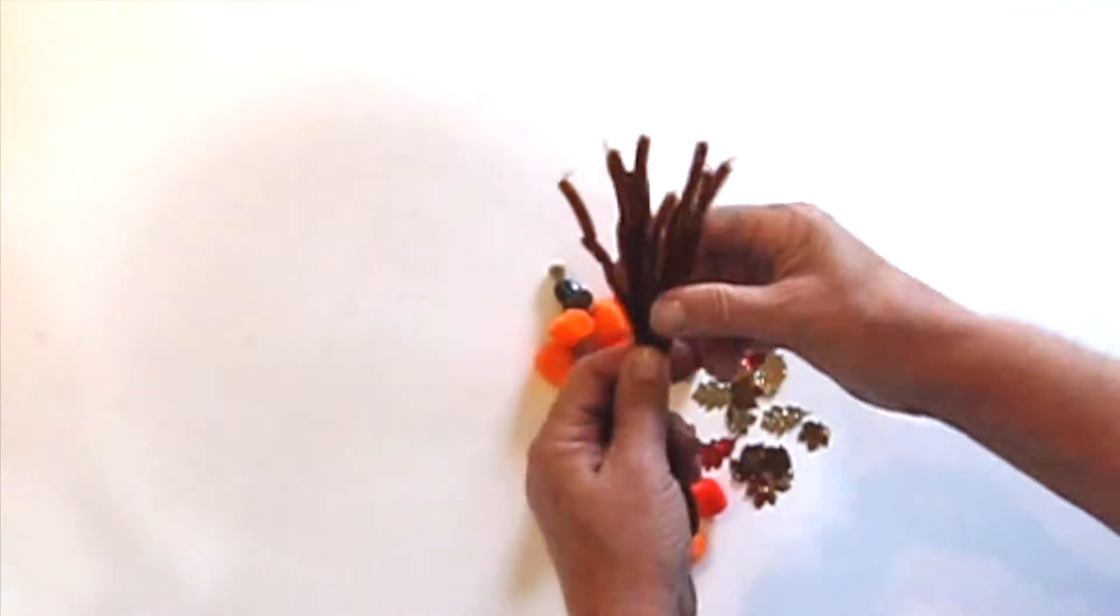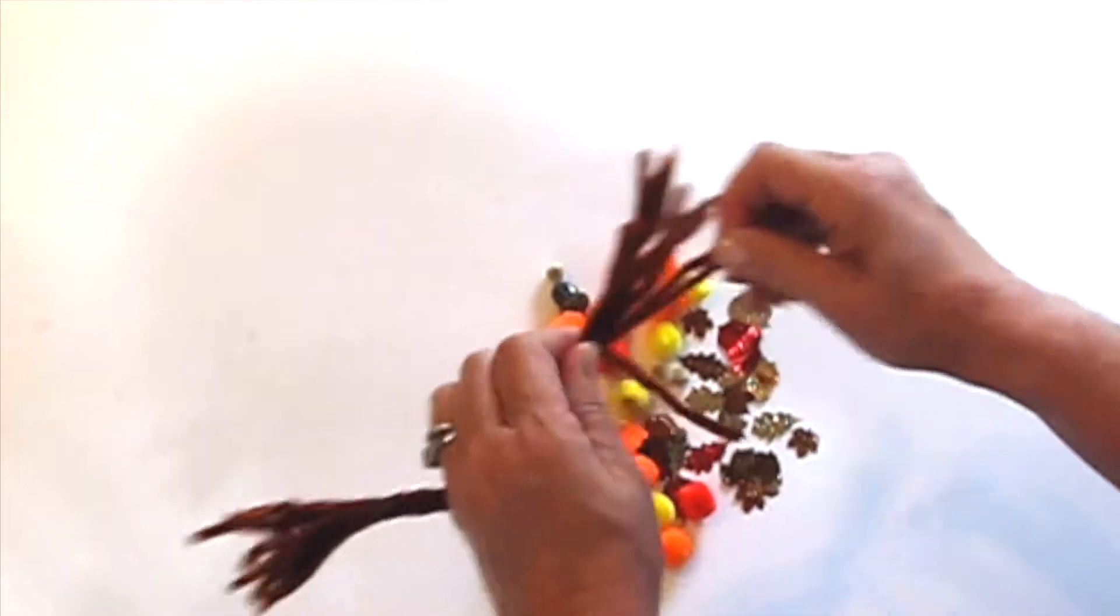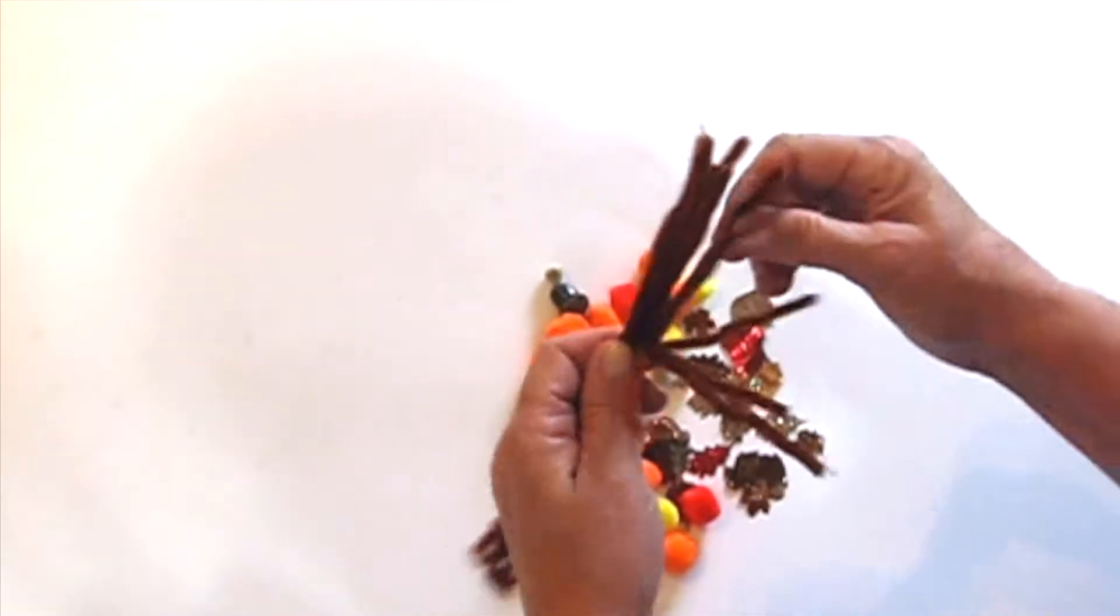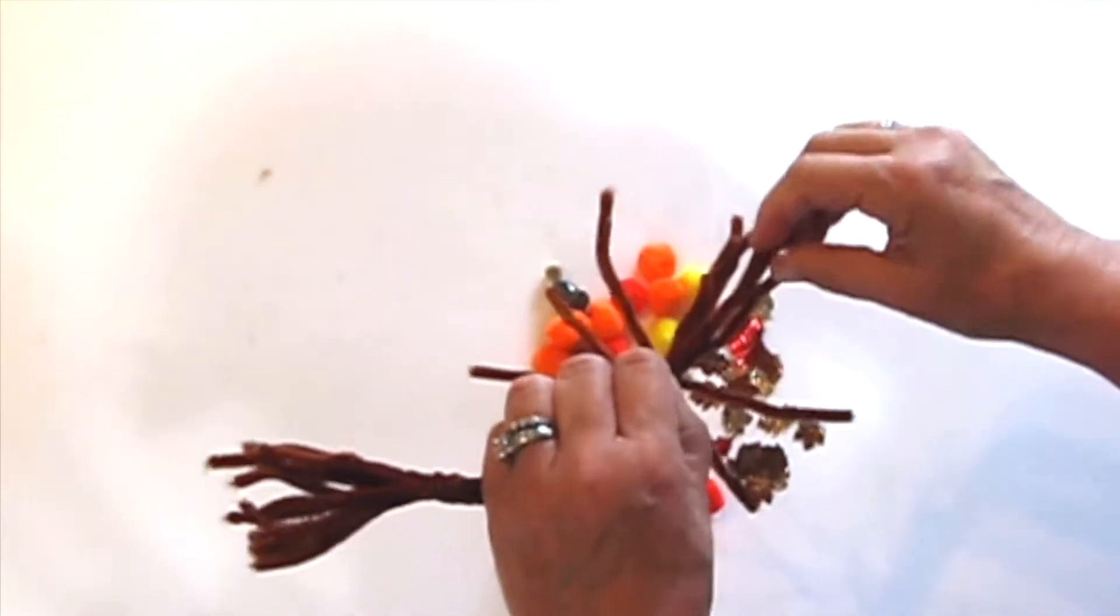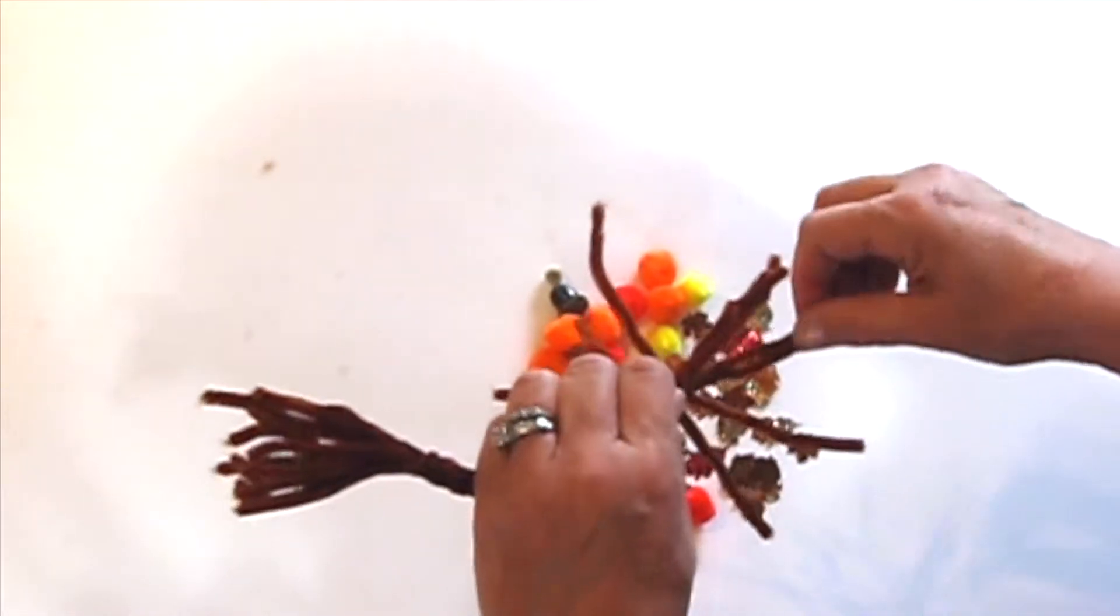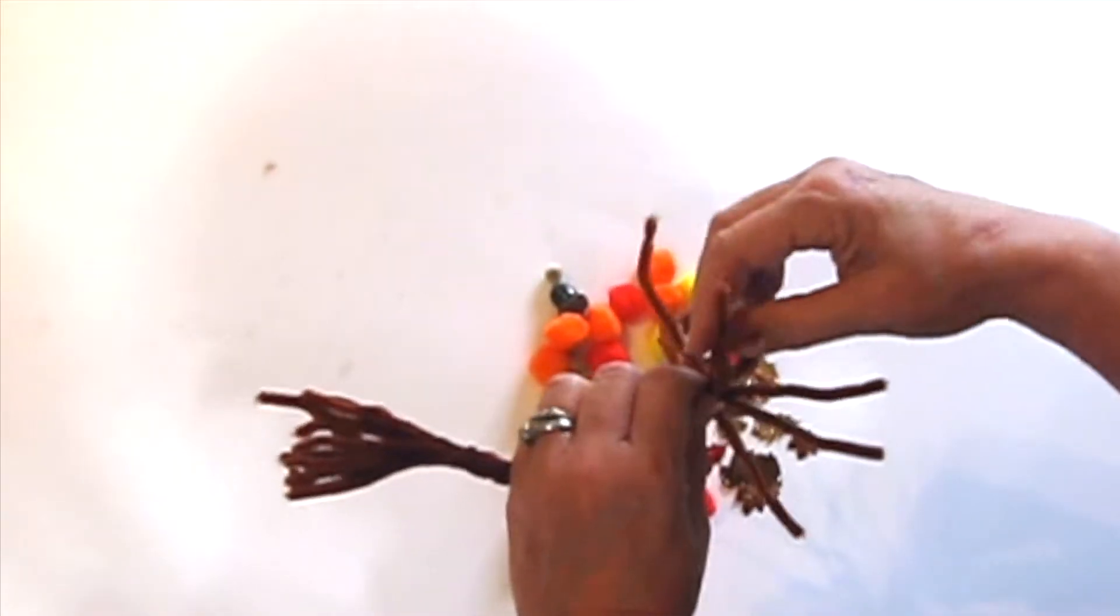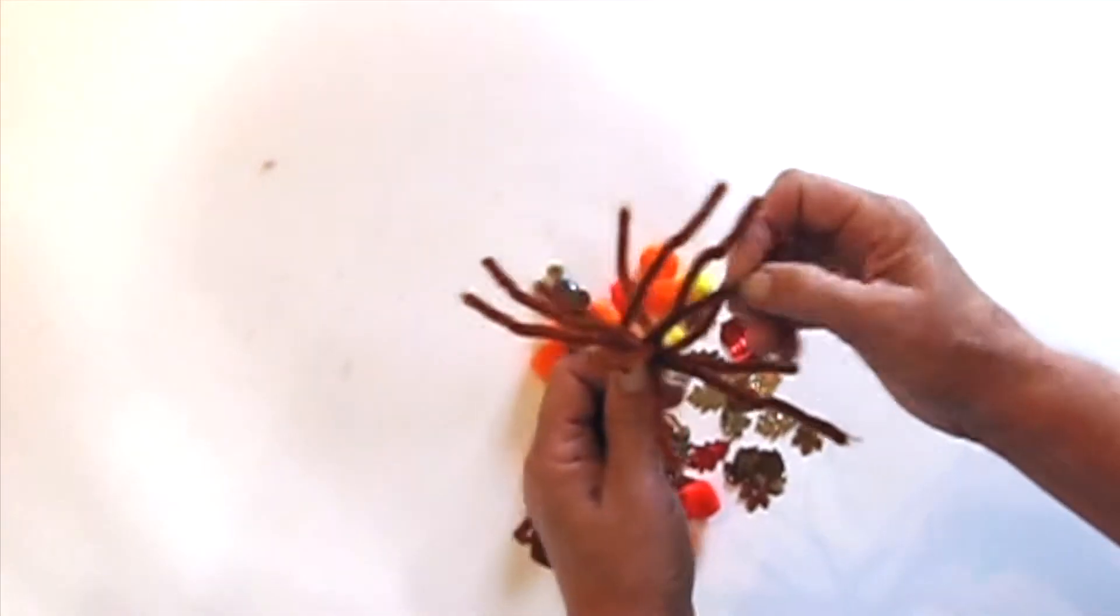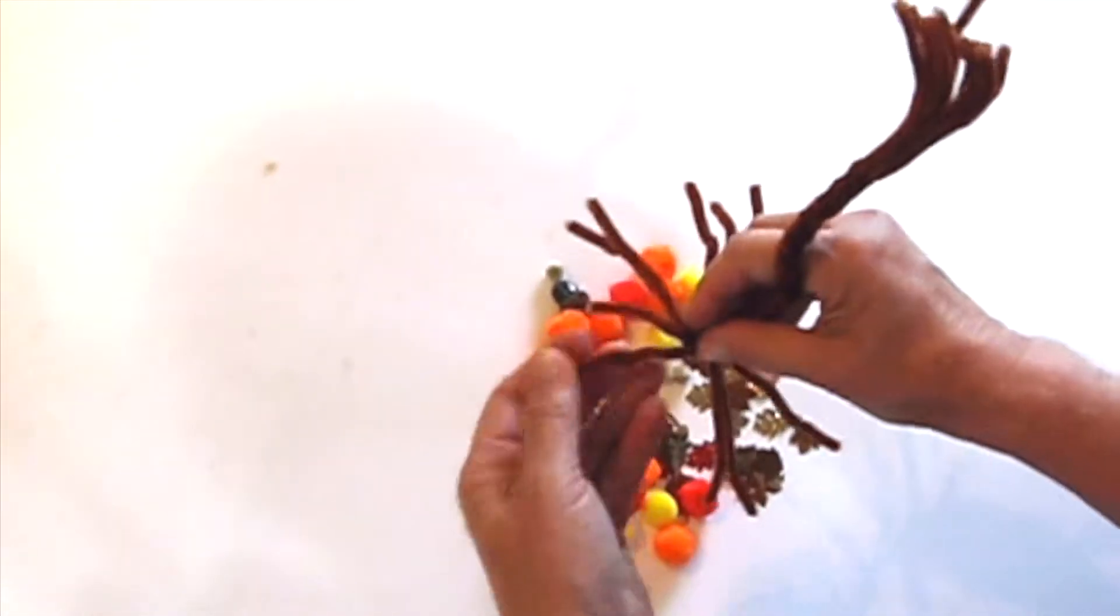And you're going to spread those out. Those are going to be the roots that help hold it, to get it to hold it up so that it'll stand when you're done. And I like to do that part first, go ahead and get it a base so that as you add your pom poms and things, it'll help it stand up.